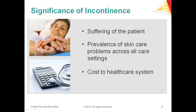Incontinence is one of the leading causes of institutionalization in the elderly, and prevalence increases with age. It is found twice as often in women as in men. Fecal and urinary incontinence have substantial morbidity — patients are impacted by both physical and psychological concerns including pressure ulcers, UTIs, falls, cellulitis, sleep deprivation, depression, and adverse effects on relationships and sexuality.